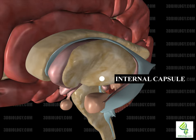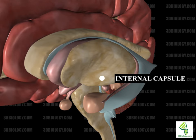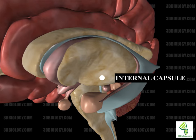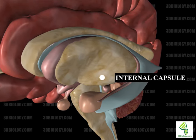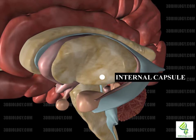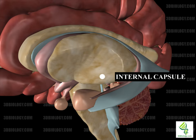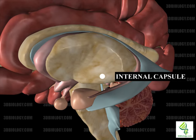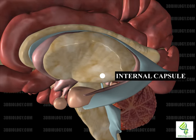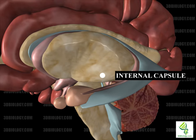The V-shaped internal capsule is a white matter structure that separates the caudate nucleus and putamen, and also the caudate and thalamus from the putamen and globus pallidus. It contains ascending and descending tracts connecting the cortex. The band in the V of the internal capsule is called the genu. It has an anterior limb and a posterior limb. Much of the internal capsule is the corticospinal tract, which carries information from the primary motor cortex to motor neurons in the spinal cord.